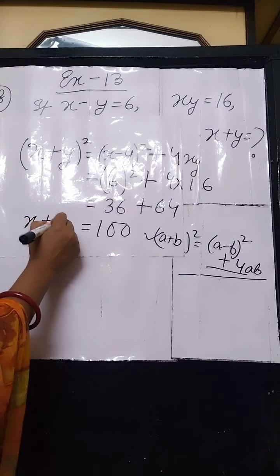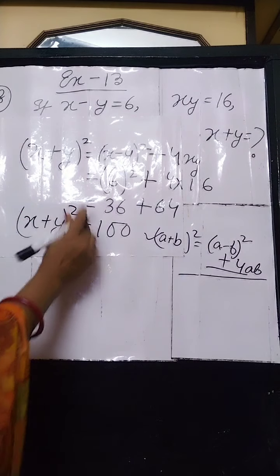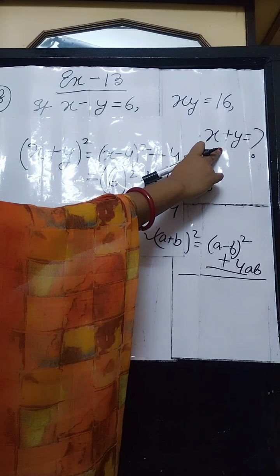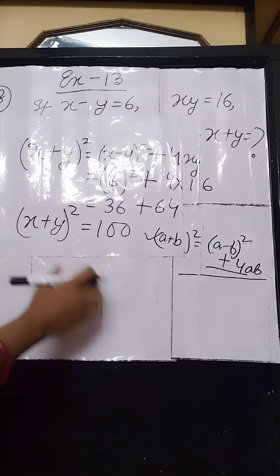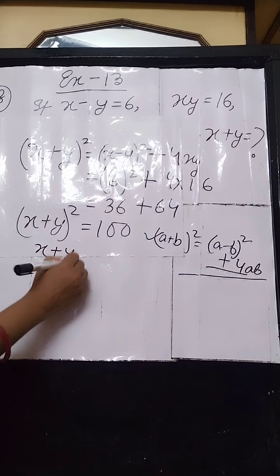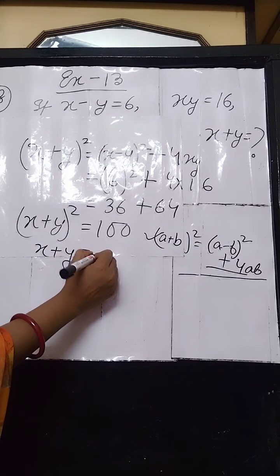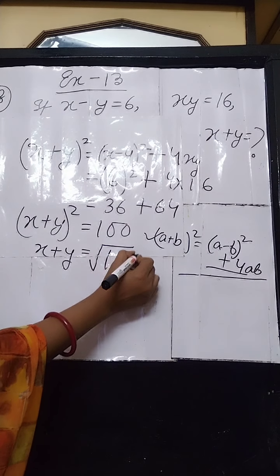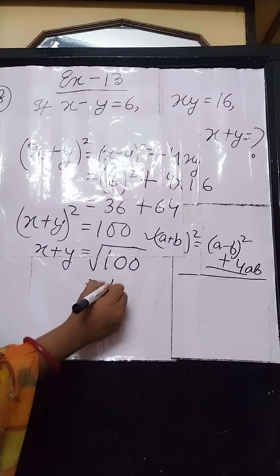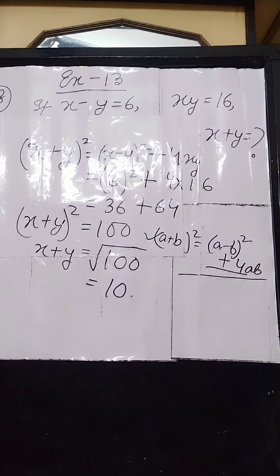So (x+y)² equals 100. But we have to find the value of x plus y only, without the square. Removing the square brings the square root to the right-hand side. The square root of 100 is 10, so the value of x plus y is 10. That is how we solve sum number 38.